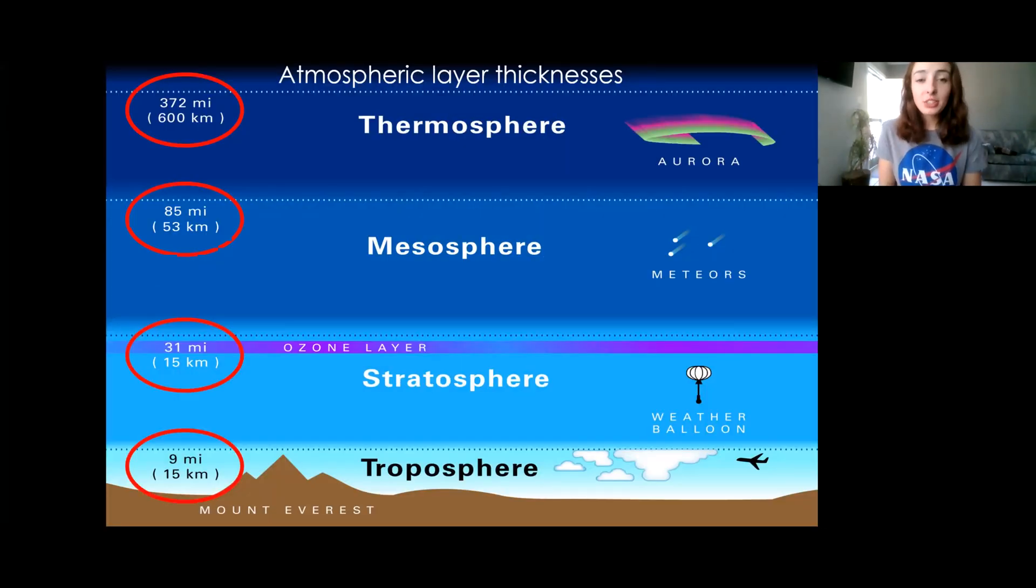How thick are these layers? This is showing the relative thicknesses of the atmospheric layers. We can see the troposphere next to Mount Everest for scale is around 10 to 15 kilometers. The stratosphere is a little thicker, around 15 to 20 kilometers. Then you have the ozone layer, which is in the stratosphere. Then you have the mesosphere, which is around 50 or more kilometers. And then you have the thermosphere, which is around 600 kilometers. And then the exosphere, anywhere from 1000 to 10,000 or just thousands of kilometers. It's really a gradient, not a sharp line at all.